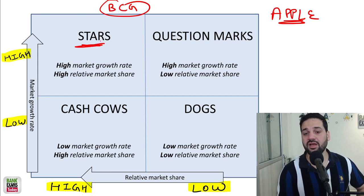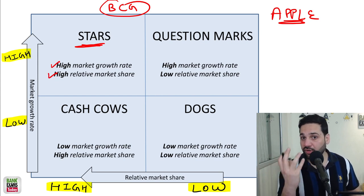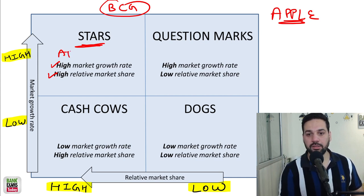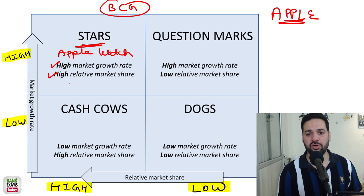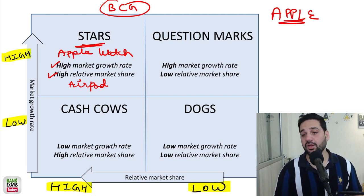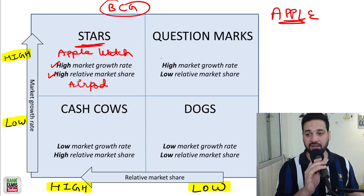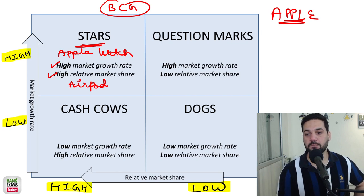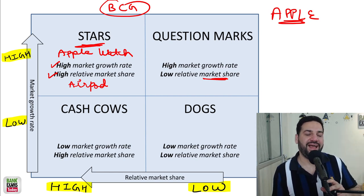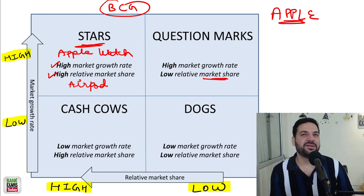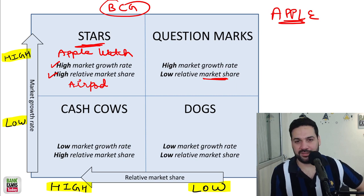What is a Star in BCG? A star is a business where the market growth rate is high and relative market share is also high. Which Apple product is a star? Apple Watch — the growth rate is really high and market share is also very high. Apple Watch and AirPods are stars for Apple. Then what is a question mark — where the growth rate is high but relative market share is low? You can tell me in the comments. I don't think Apple has many question marks at the moment.